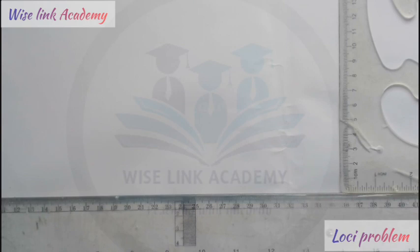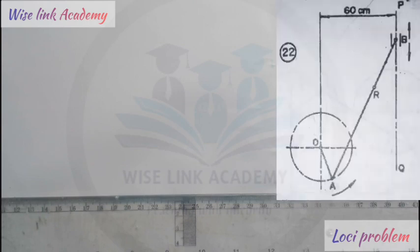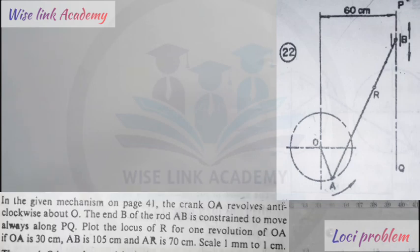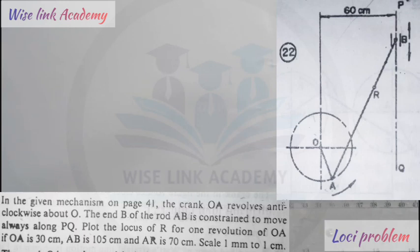As you can see the figure at the right-hand side of the screen and also the question in front of you, the question goes this way: The crank OA revolves anti-clockwise about O. The end B of the rod AB is constrained to move always along PQ. Plot the locus of R for one revolution of OA, if OA is 30 cm, AB is 105 cm, and AR is 70 cm. Scale: 1 mm to 1 cm.